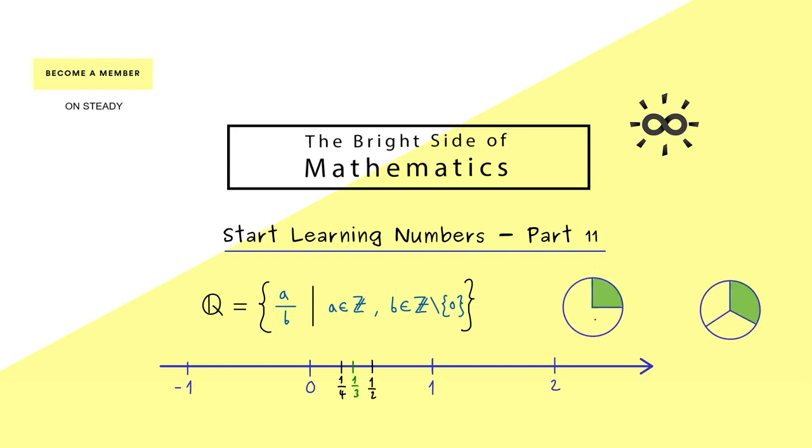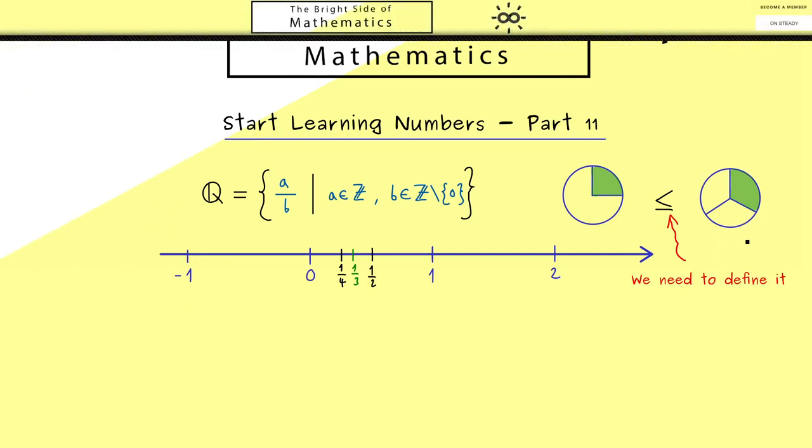Of course, if we think of ratios, one quarter should be less than one third. However, this less or equal sign here we first have to define, and that is exactly the thing we want to do in this video today.